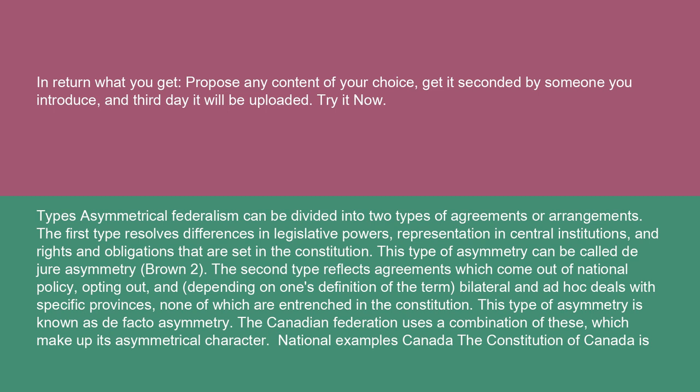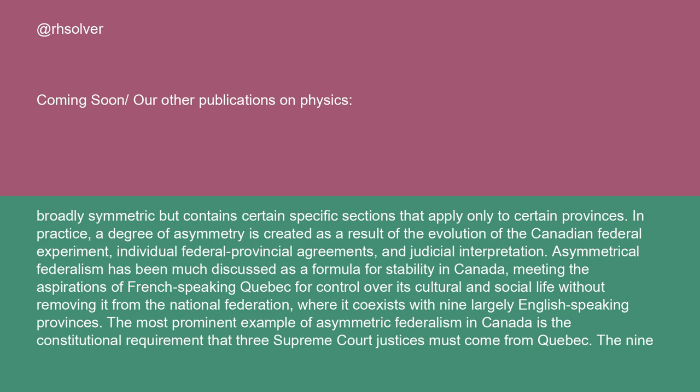Canada: the Constitution of Canada is broadly symmetric, but contains certain specific sections that apply only to certain provinces. In practice, a degree of asymmetry is created as a result of the evolution of the Canadian federal experiment, individual federal-provincial agreements, and judicial interpretation. Asymmetrical federalism has been much discussed as a formula for stability in Canada, meeting the aspirations of French-speaking Quebec for control over its cultural and social life without removing it from the national federation, where it coexists with nine largely English-speaking provinces. The most prominent example of asymmetric federalism in Canada is the constitutional requirement that three Supreme Court justices must come from Quebec.